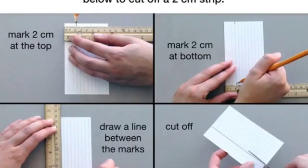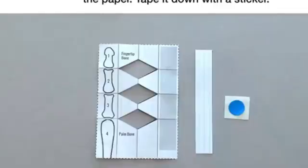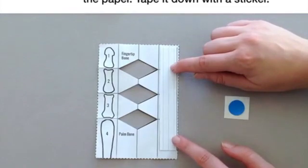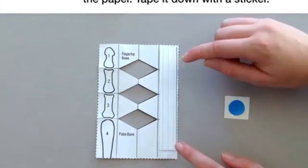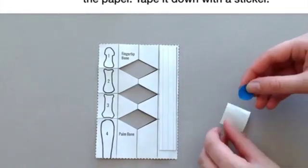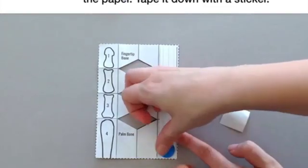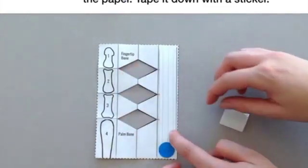Get your 3x5 card. Then follow the steps below to cut off a 2cm strip. Use the strip to cover the gray rectangle on the paper. Then tape it down with a sticker at the bottom like this. If you don't have a sticker, you can use the piece of tape that you got.